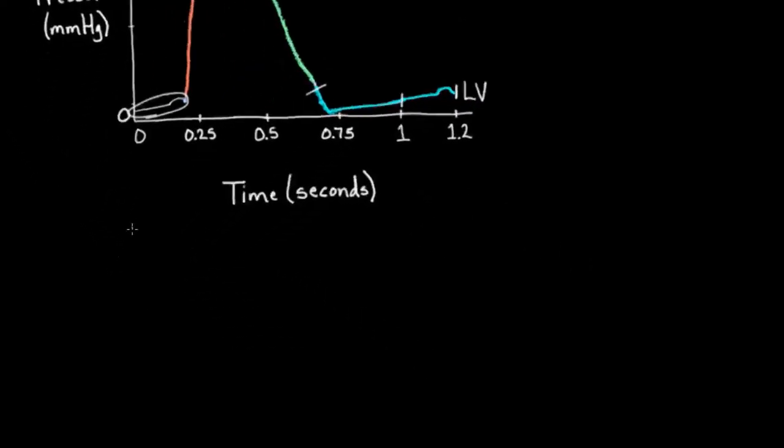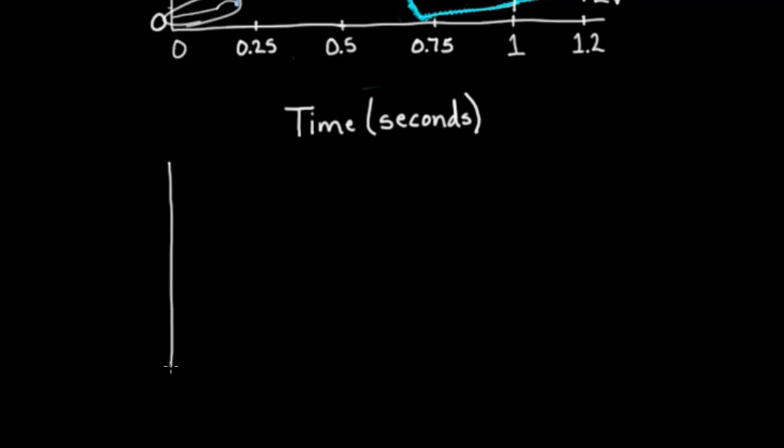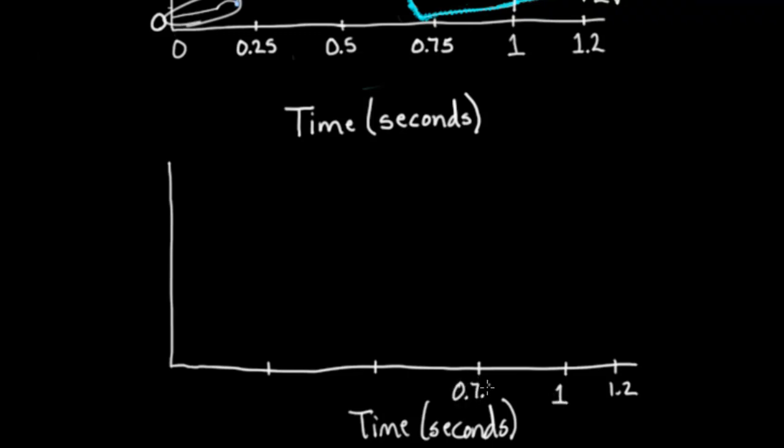Now, instead of looking at pressure, what I want to do is actually look at volume. So I'm going to draw out the same axis. We're going to have time using seconds over here. And I'm going to follow the heart, specifically the left ventricle, in the same way I was following it before, in four sets. This is, let's say, 1.2 seconds. This could be one second, 0.75, 0.5, and 0.25.